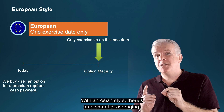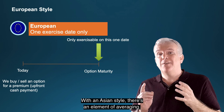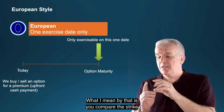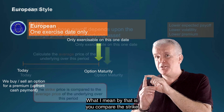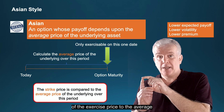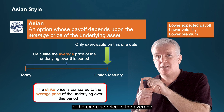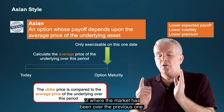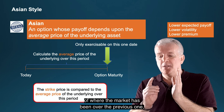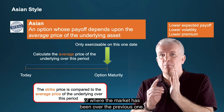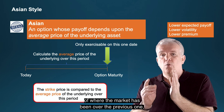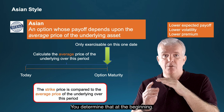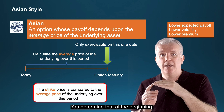With an Asian style there's an element of averaging. What I mean by that is you compare the strike or the exercise price to the average of where the market has been over the previous one, two, three, or six months. You determine that at the beginning.